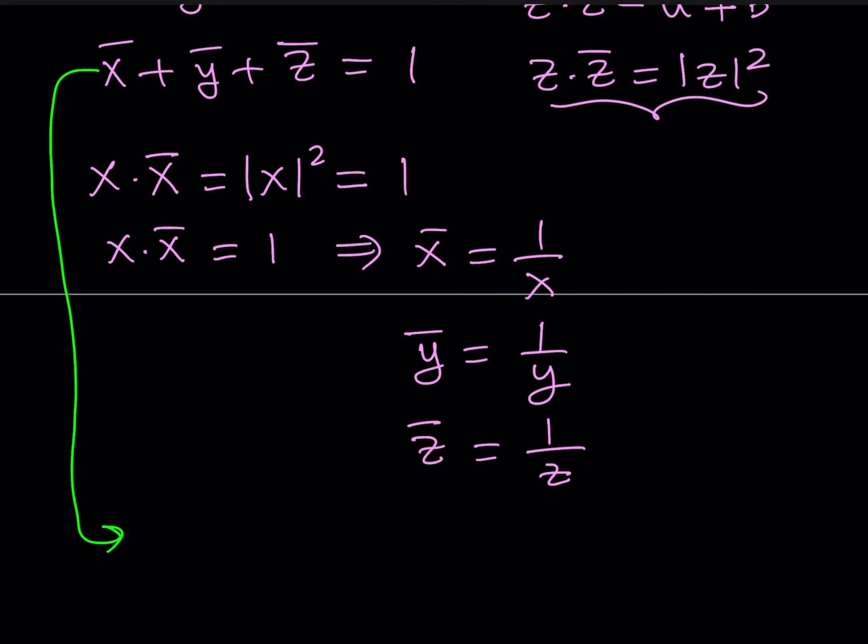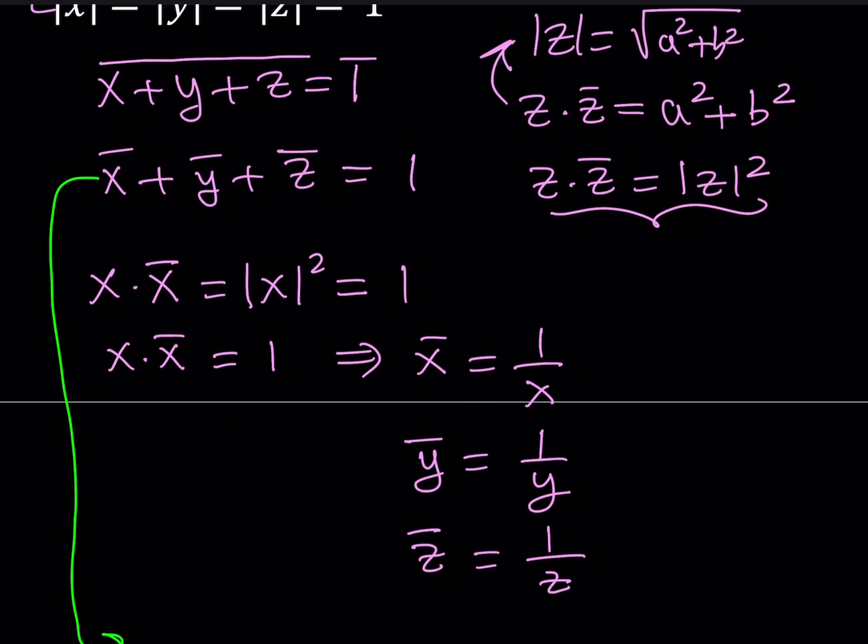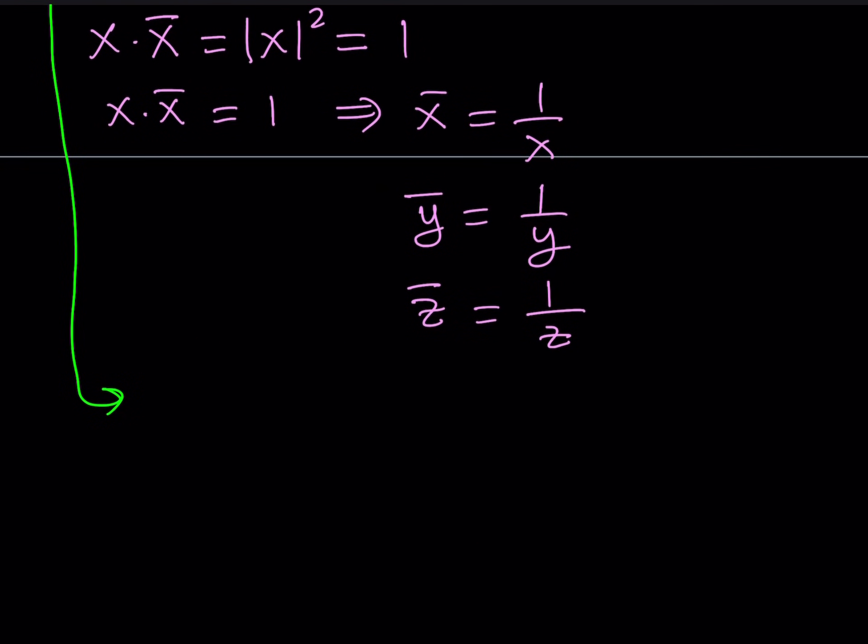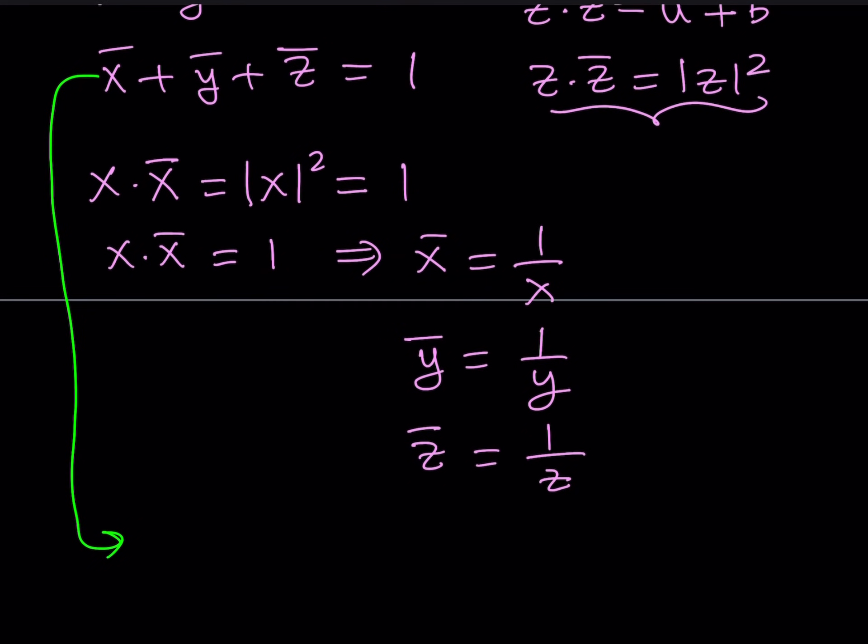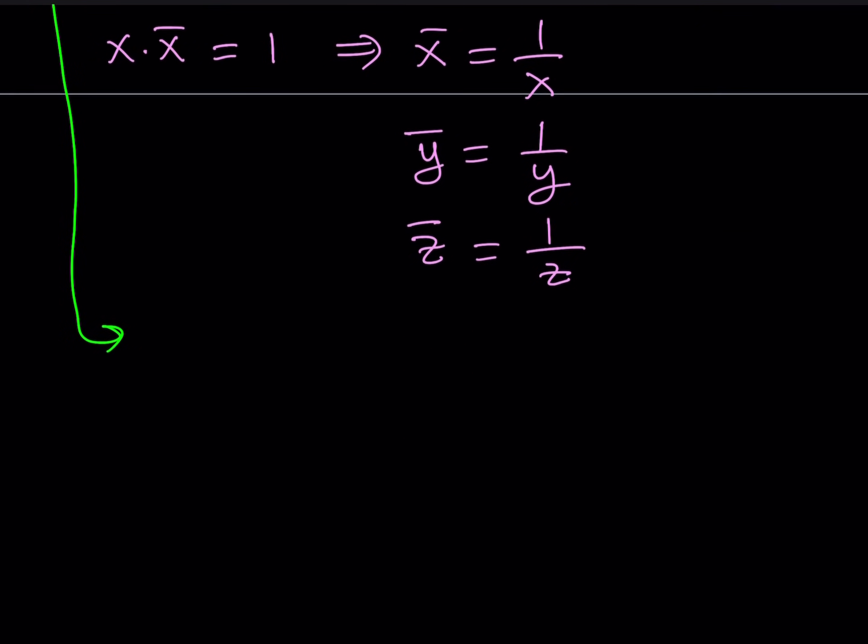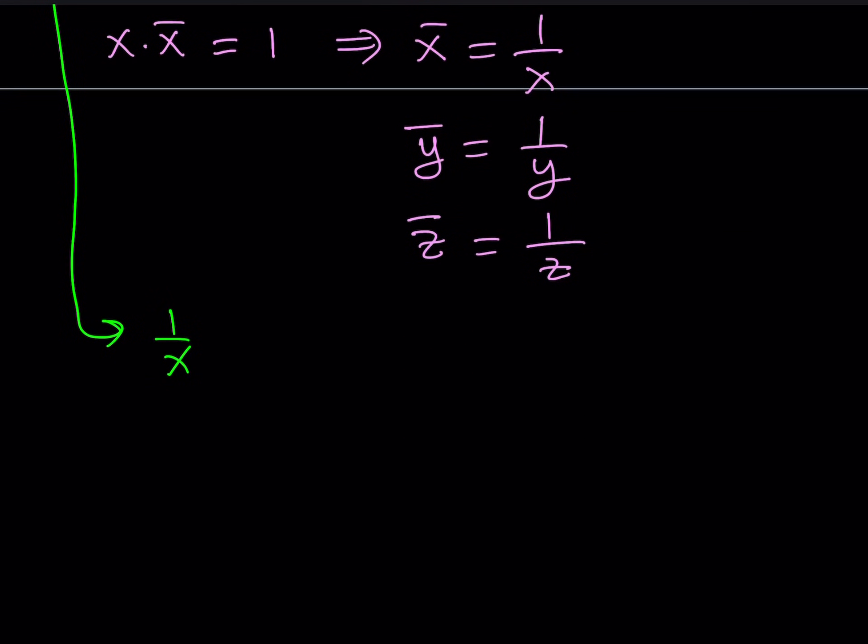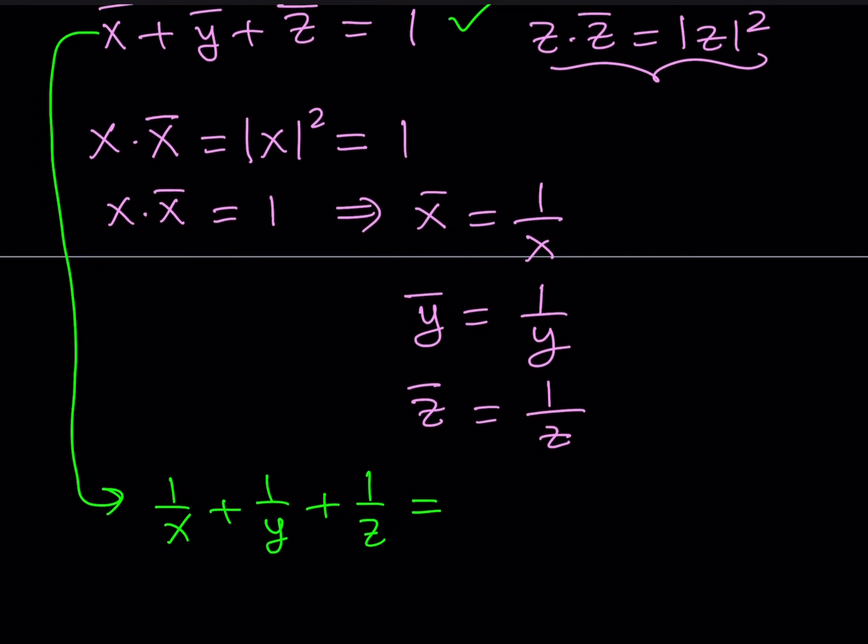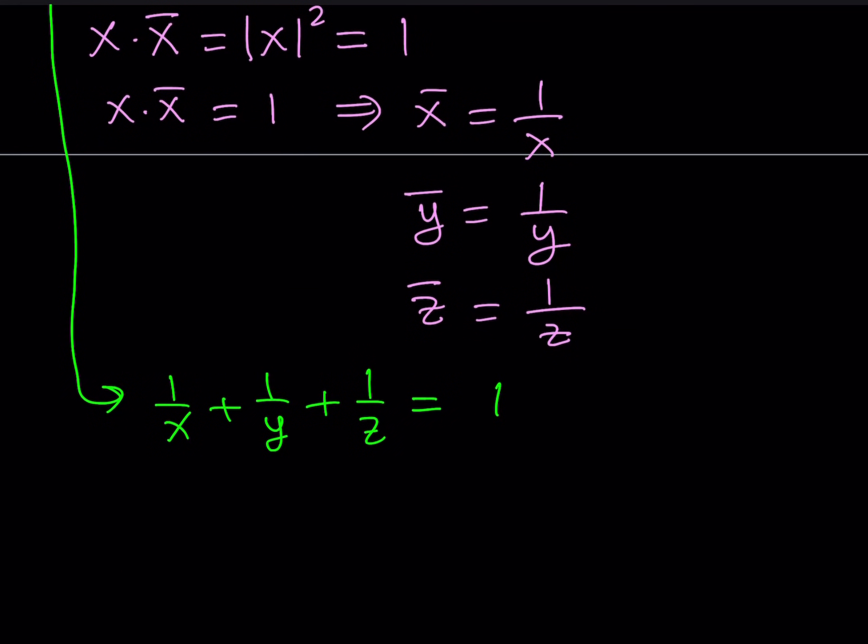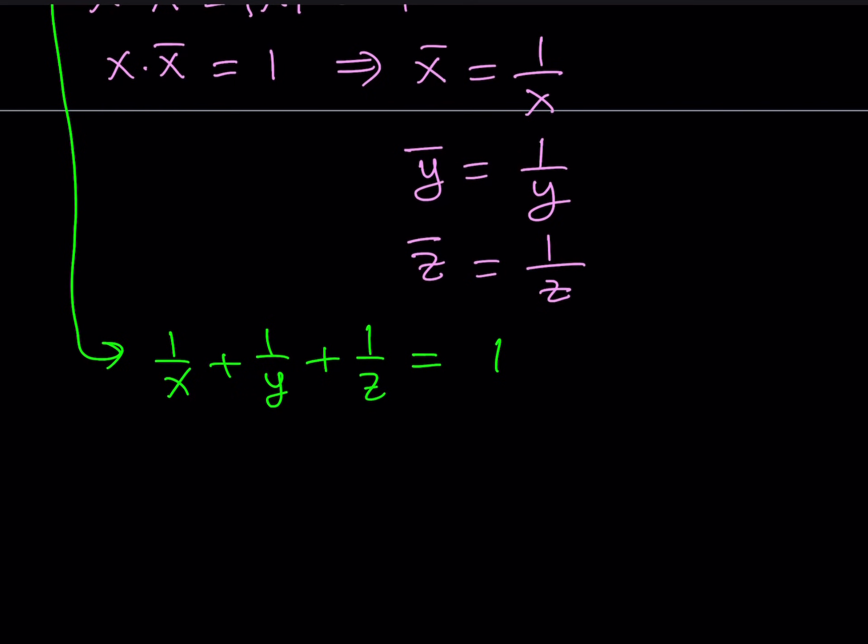We know that the sum of the conjugates is equal to 1 because the sum of XYZ is equal to 1. So let's go ahead and substitute each of these, the reciprocals, into this equation. That gives us 1 over X plus 1 over Y plus 1 over Z, which should equal 1. Now this is super important because I can make a common denominator and get something nice out of this.